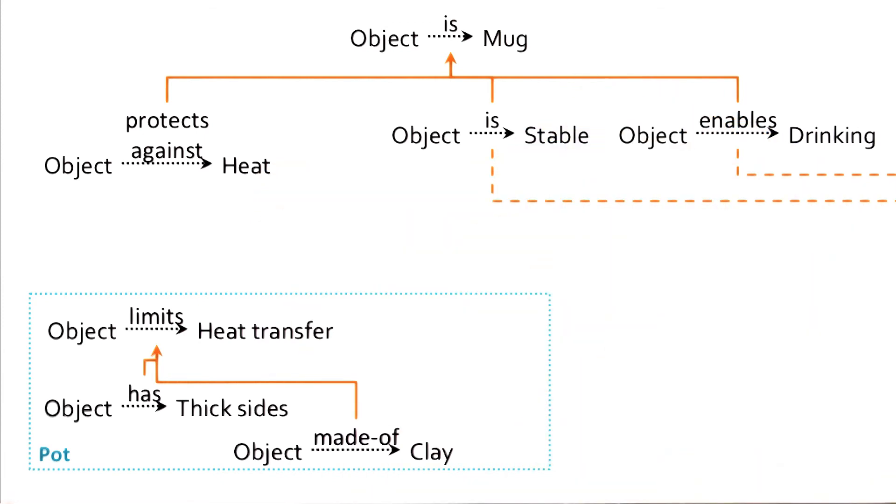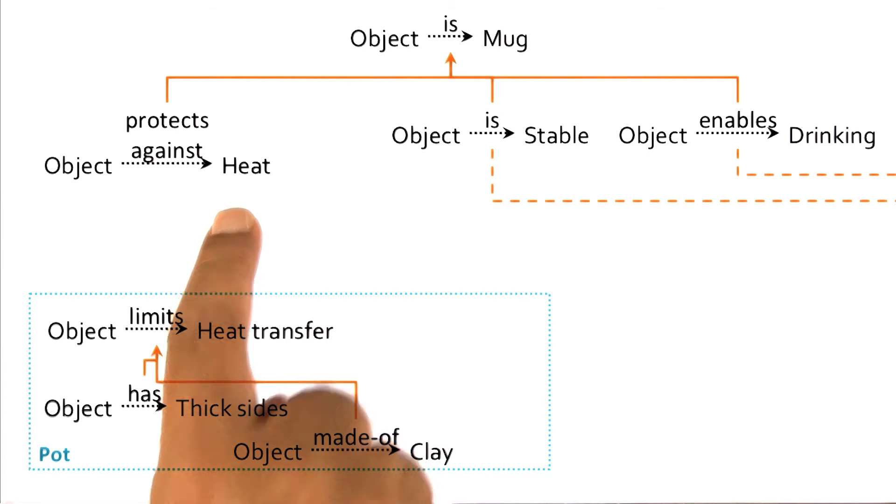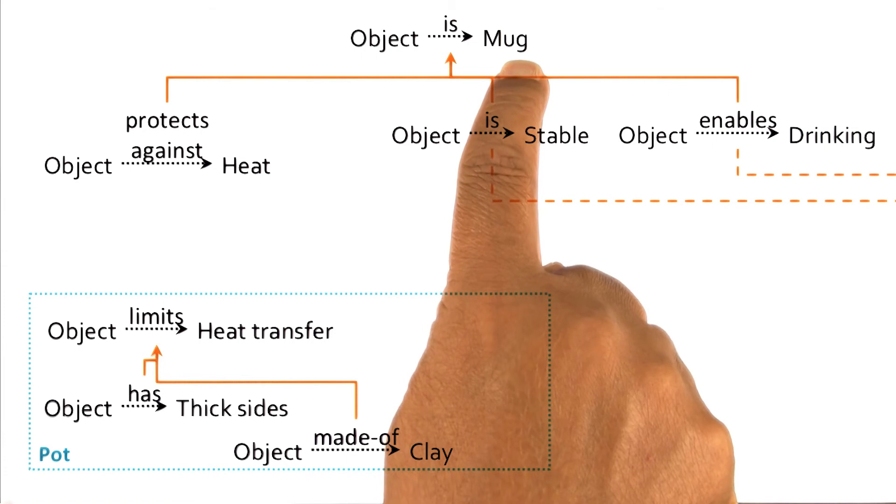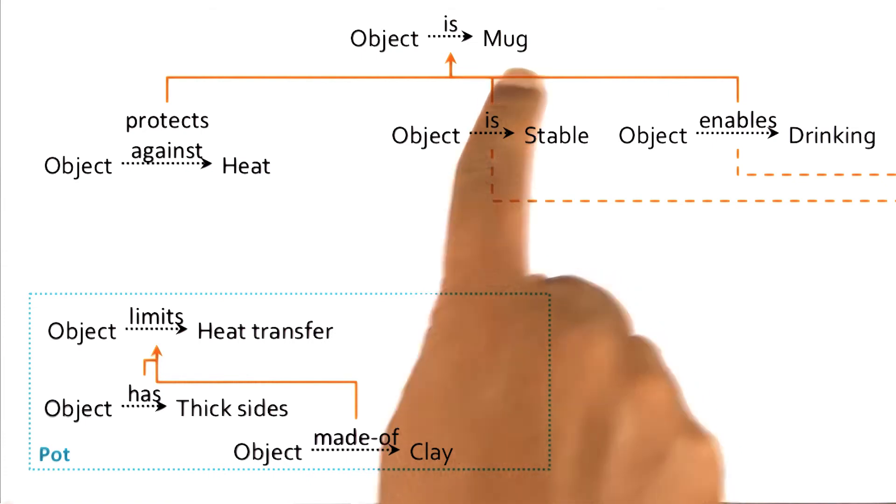That is good, David. Let us make sure that we understand the processing that David did. He wanted to show that the object is a mug. So he looked at the conditions, the open conditions for proving that the object is a mug, and there were three of them.